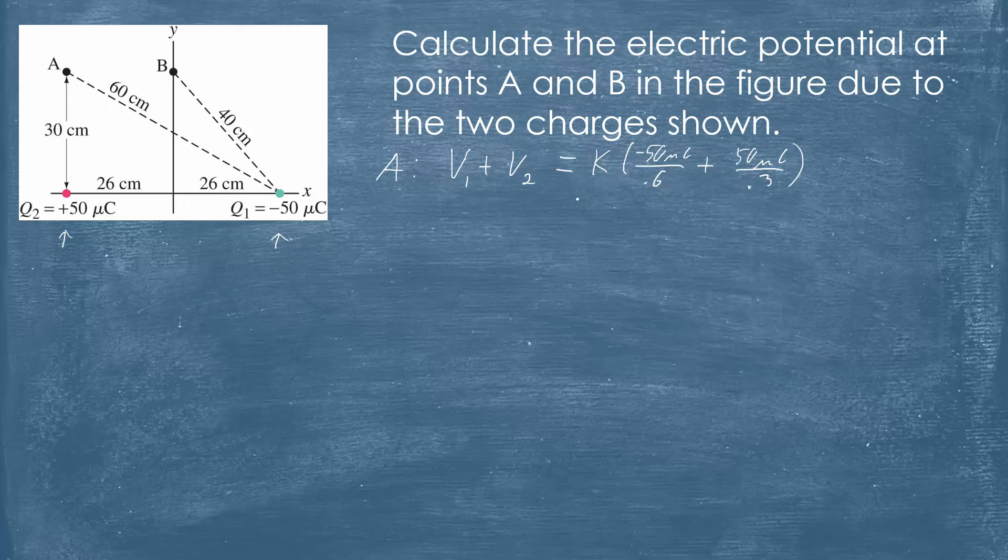You can factor a 50 out as well, so you'll have k times 50×10⁻⁶ times 1 over 0.3 minus 1 over 0.6. Anyway, plug into that and you get 750,000 volts of electric potential at point A.